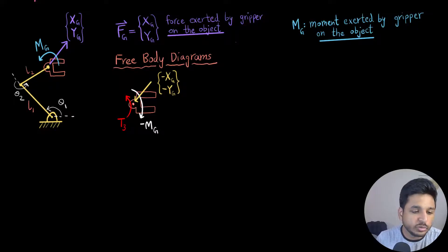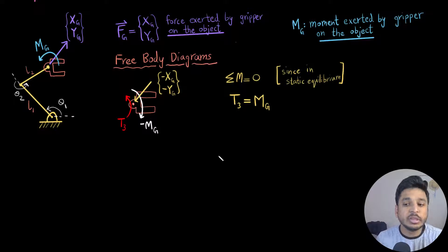So if I just do summation of moments and I know it is in static equilibrium, the summation of moment is going to be zero. So my T3 comes out to be equal to Mg. So this is how powerful my third motor needs to be.